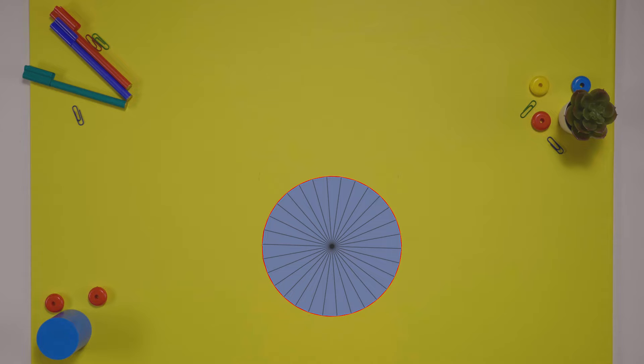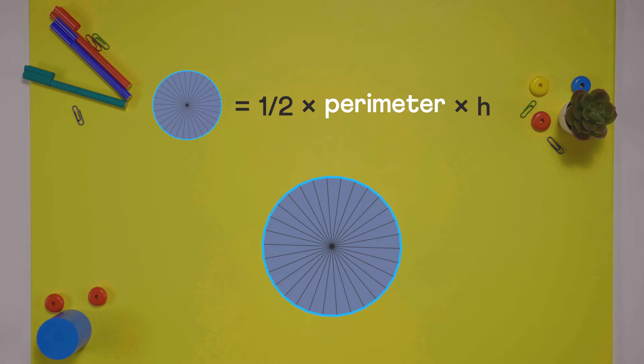Let's increase the number of sides to 30. Its area is almost equal to that of the circle, which is 30 times the area of a triangle. Again, this term is the perimeter of this 30-sided polygon.